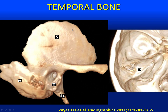This is what it would look like if you were to cut out the bones at the sutures around the temporal bone. Here's the squamosal portion of the temporal bone, mastoid portion, tympanic portion, the styloid, and here's the petrous portion of the temporal bone.